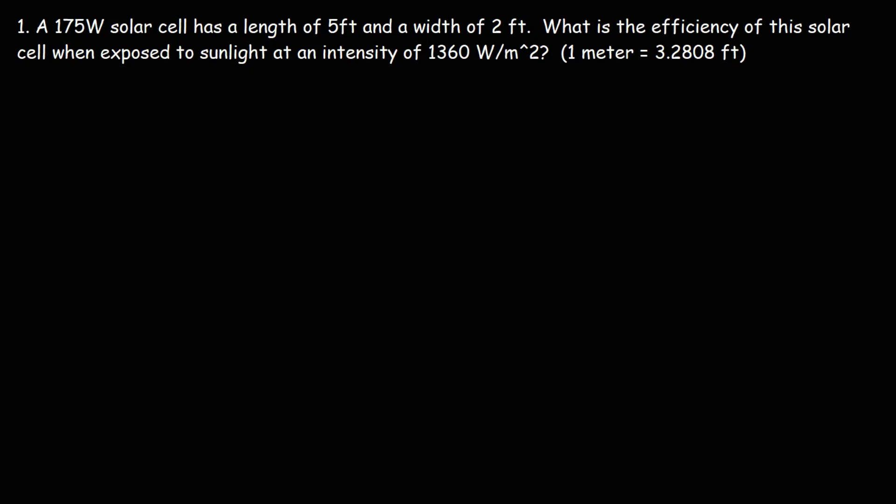How do you calculate the efficiency of a solar cell? We're going to talk about how to do that in this video through this problem. We have a 175-watt solar cell, and we're given the dimensions of the solar cell — a length of 5 feet and a width of 2 feet. What is the efficiency of this solar cell? We're given the average solar intensity of 1360 watts per square meter. Feel free to pause the video and work this problem out.